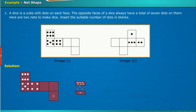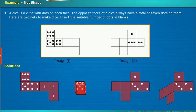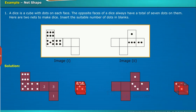So the opposite face of six will be one, the opposite face of five will be two, and the opposite face of four will be three. Similarly unfolding the second net diagram we get as shown, so opposite of three is four, opposite of two is five and opposite of one is six.